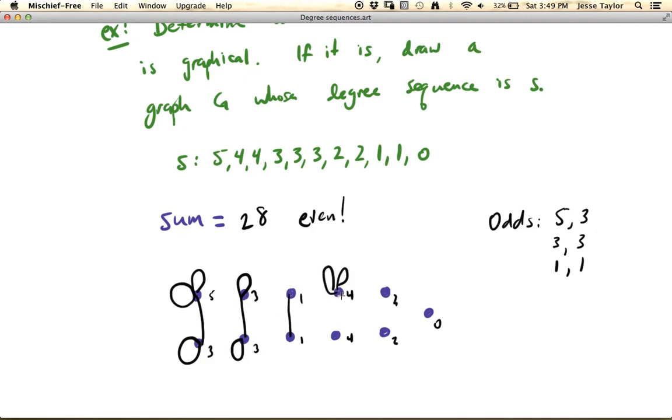And I can just add loops to add an even number to each of these remaining degrees. Now this is 1 and 1, so it's done. But for 4, add a couple of loops, 4, add a couple of loops, 2, add one loop, 2, add one loop, and here's my graph. And this is always going to work.